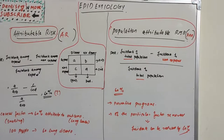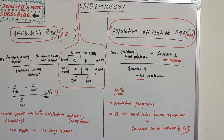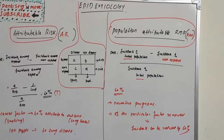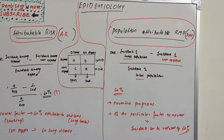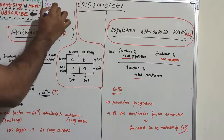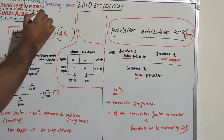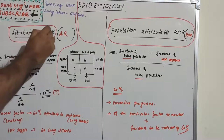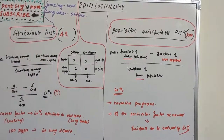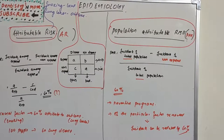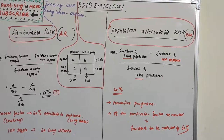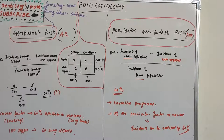Attributable risk is a different concept where we check the power of a particular causal factor in determining the outcome. For example, with smoking and lung cancer — smoking is the cause and lung cancer is the outcome — attributable risk determines the attributable or contributable power of that particular risk factor in deciding the outcome.